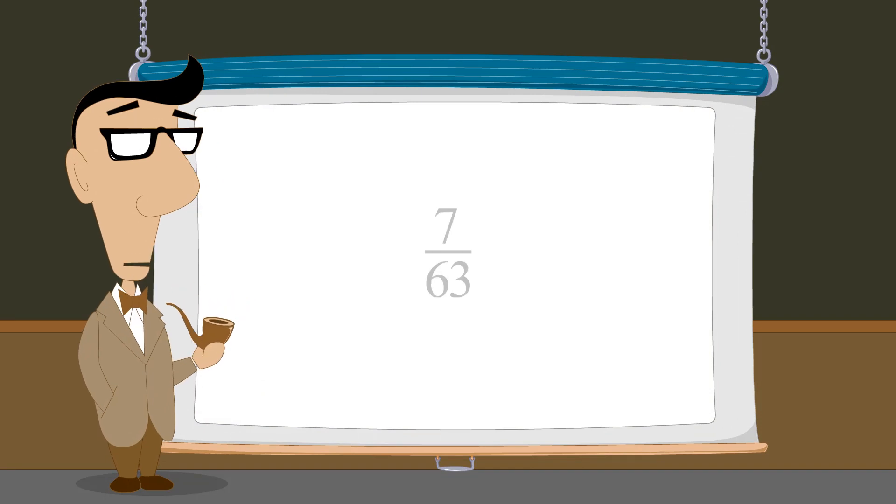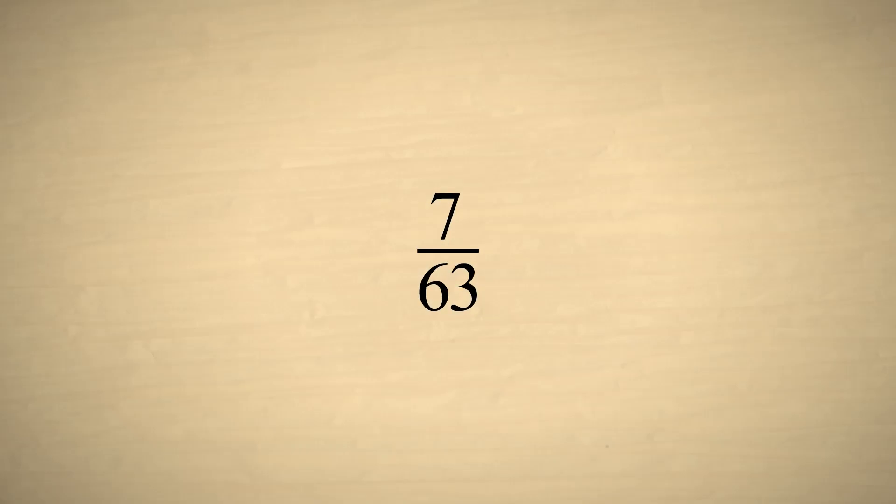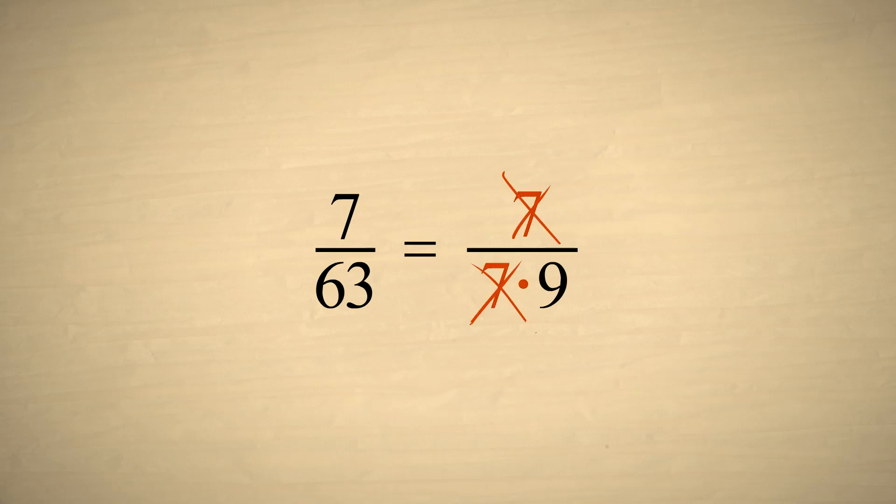As our last example, let's reduce seven sixty-thirds. The seven in the top is a prime number, but we can factor the sixty-three in the bottom. When we cancel out the factors of seven in the top and bottom, we will be left with a nine in the bottom.